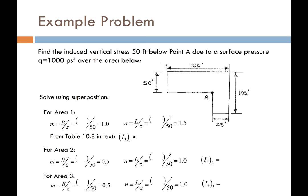We'll use Boussinesq rectangles to solve this problem. We find a combination of rectangles from which point A falls beneath the corner of all of them. Drawing two lines in gray, we divide this corner footing into three different rectangles — rectangle 1, rectangle 2, rectangle 3 — and point A falls on the corner of all three. We are not beneath the center of any of these rectangles; it is beneath the corner.